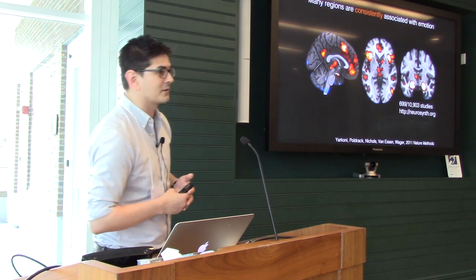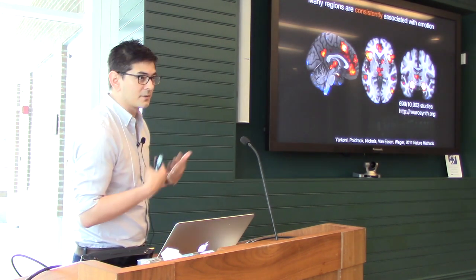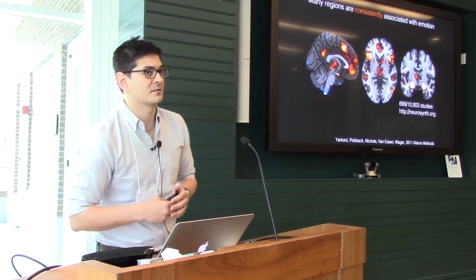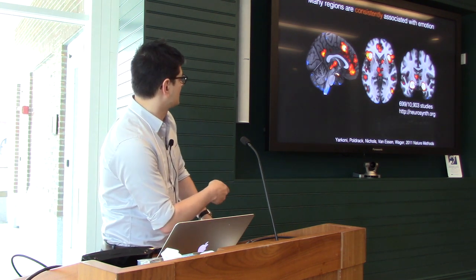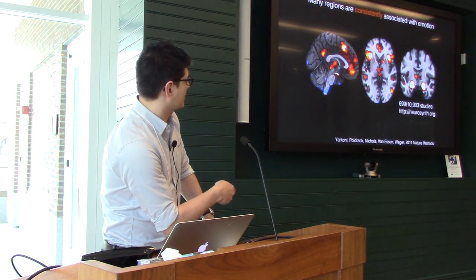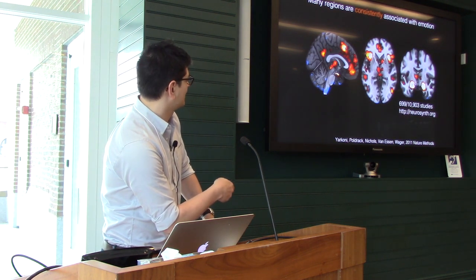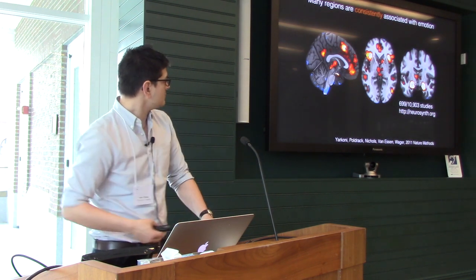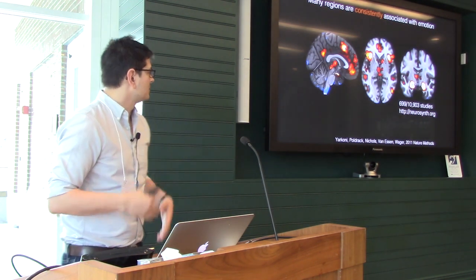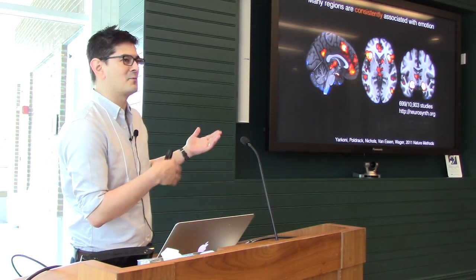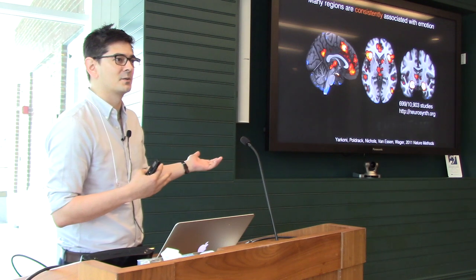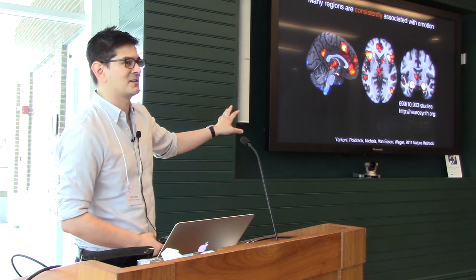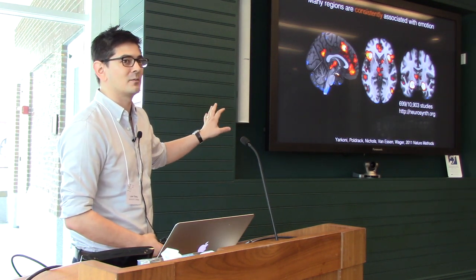This is 700 studies that frequently mentioned the word 'emotion,' and these are the regions consistently reported. You can see there are regions we would expect — the amygdala, the insula, the cingulate. Would you say this is a brain representation of emotion? I can safely say that across 700 studies, this is very reliable.